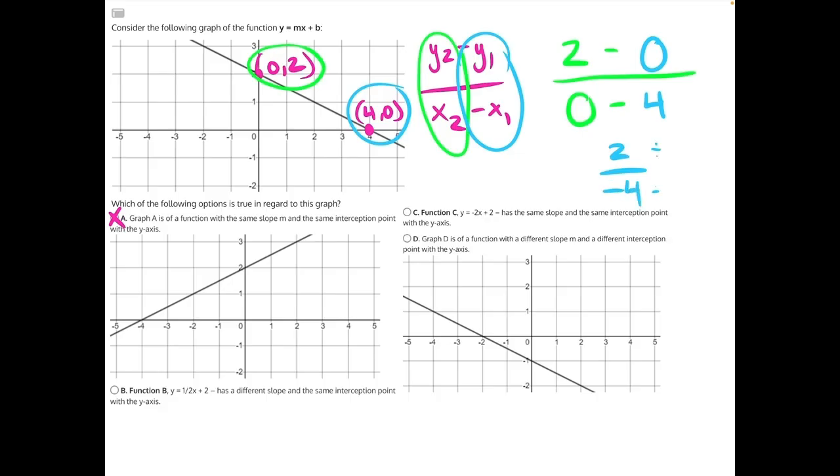Then we'll need to simplify. Divide the top and bottom by the greatest common factor, which is 2. That will give us 2 divided by 2 is 1, and negative 4 divided by 2 is negative 2. All in all, giving us the slope of negative 1 half.